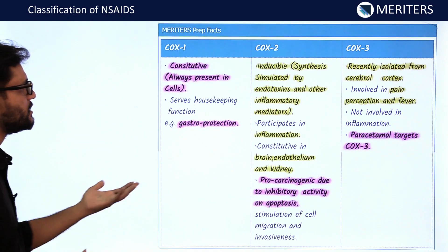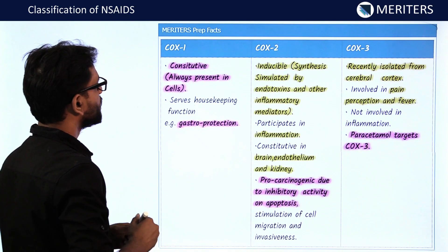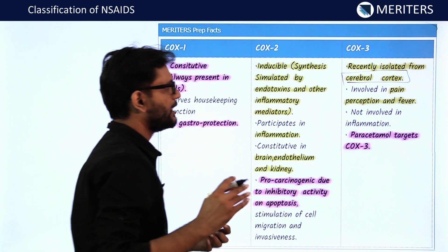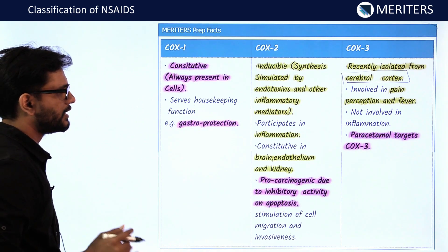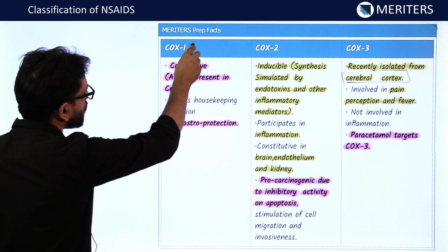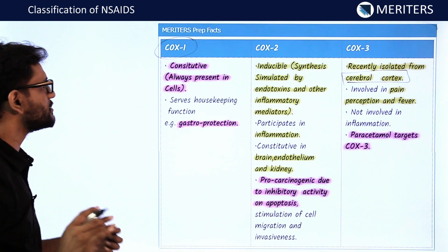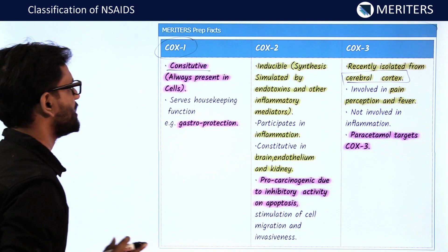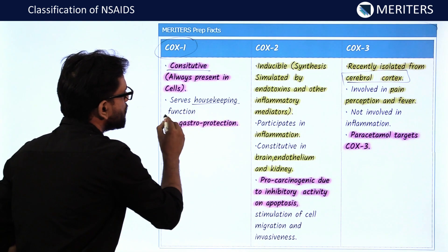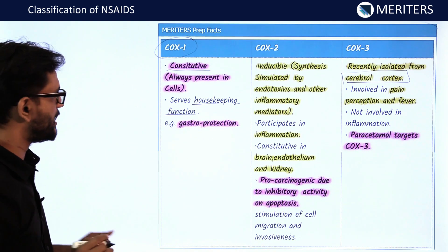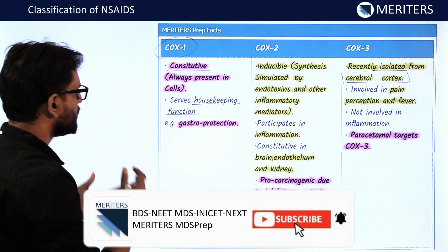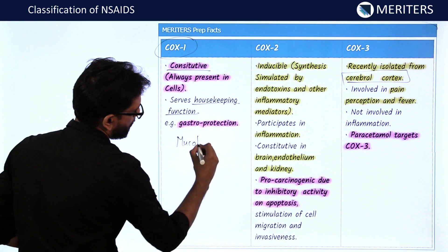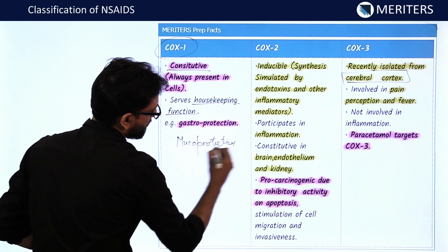The cyclooxygenase enzymes convert arachidonic acid into prostaglandins. There are generally two types, but a third type has recently been isolated from the cerebral cortex. COX-1 is a constitutive enzyme — always present in cells — and performs housekeeping functions. It secretes prostaglandins that protect the gastric lining and has mucoprotective function.